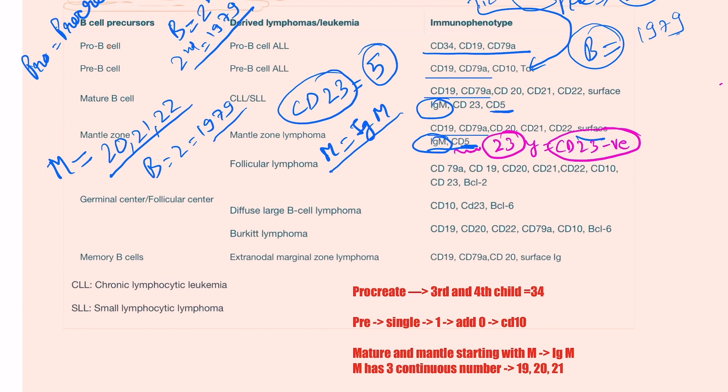Now we move on to the follicular. Follicular is like lifting a World Cup. So double L, both are showing the two ends of the World Cup. So automatically we know that for B cell we have 1979. Again, 2021, 22 would be positive because of being a mantle zone. And the latest World Cup was played in 2023 in India, but remember in this Indians came second because we lost in the final.